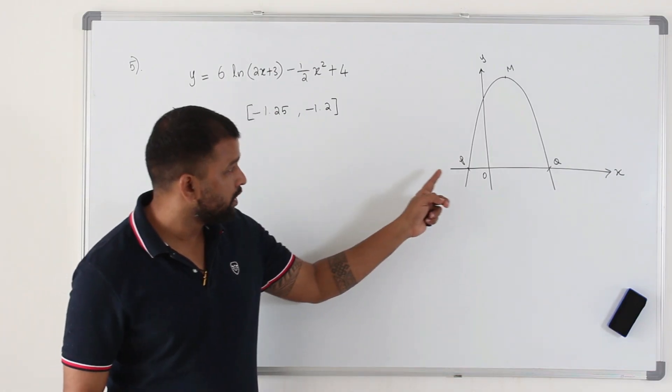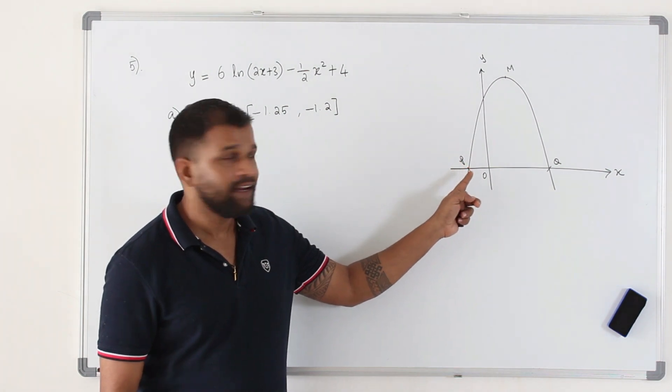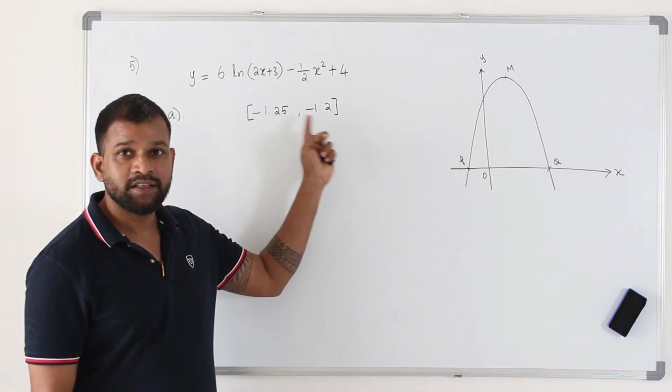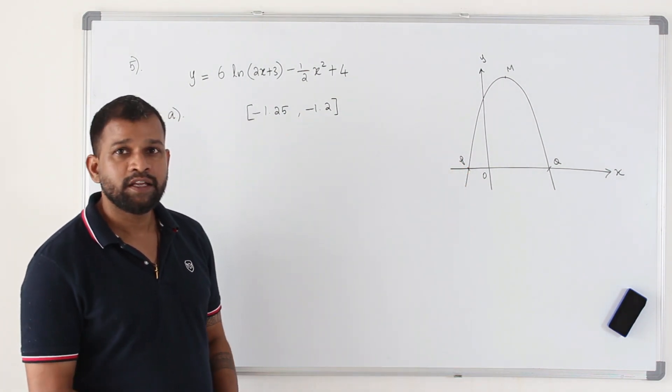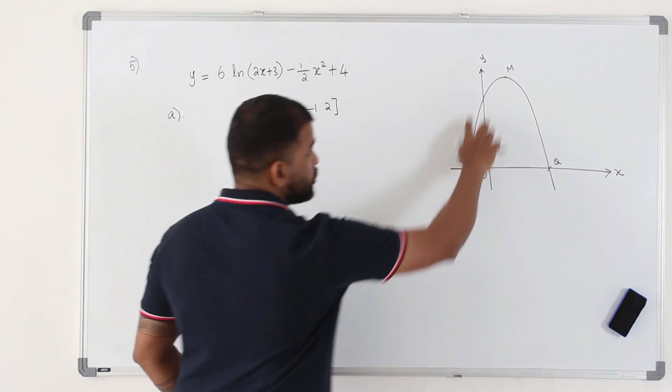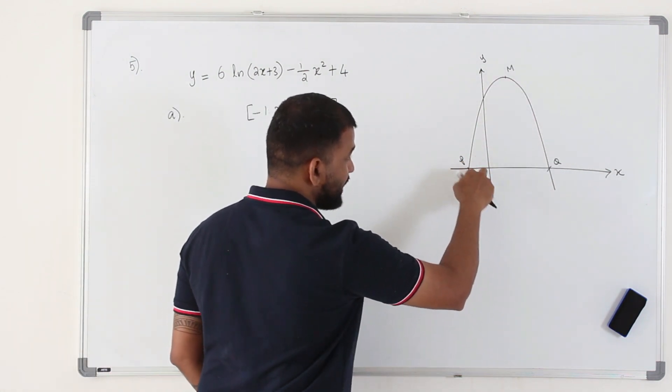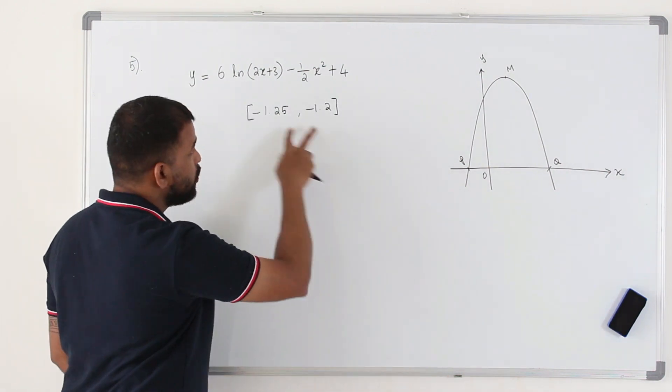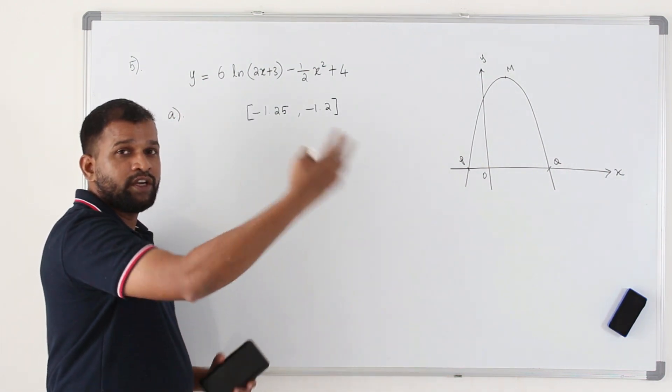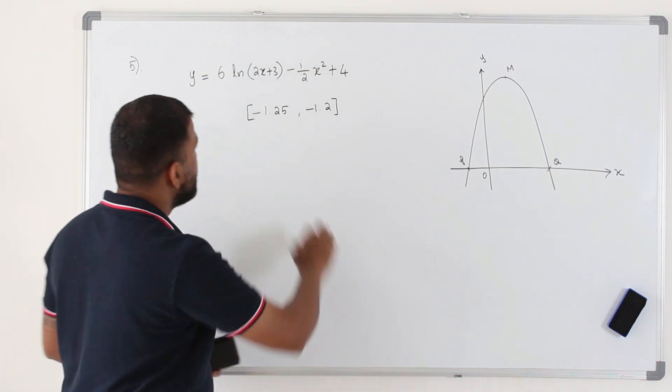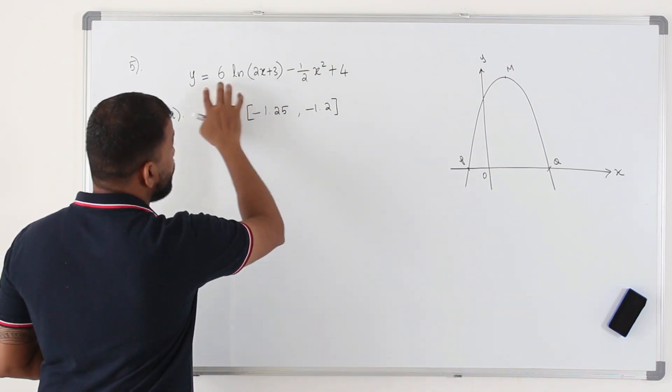So in order to prove that the x-coordinate of P lies between these two values, it's basically proving that the function has a root, because P is the x-intercept, right? The function has a root between these two points. So we need to apply the change of sign rule.